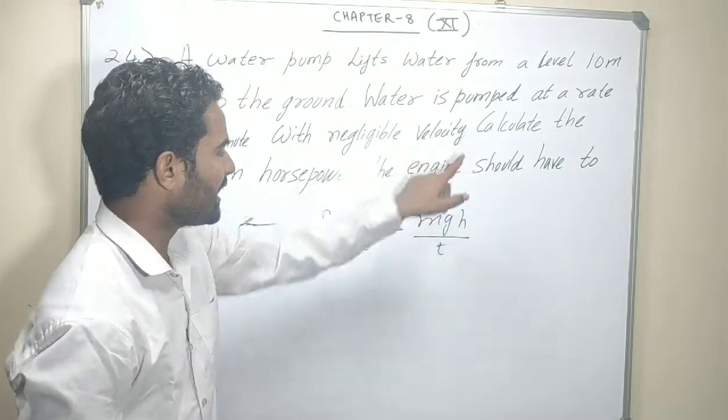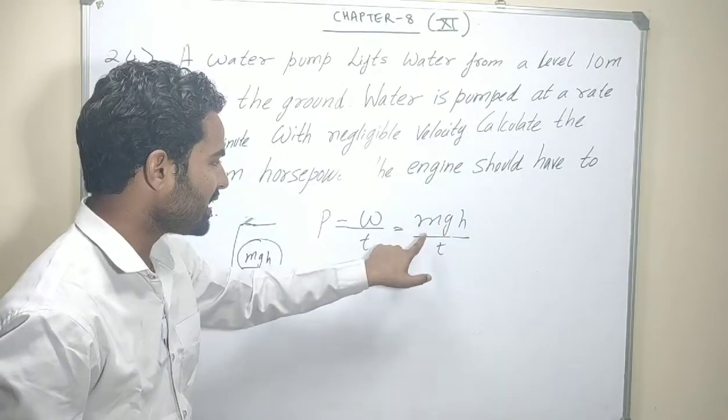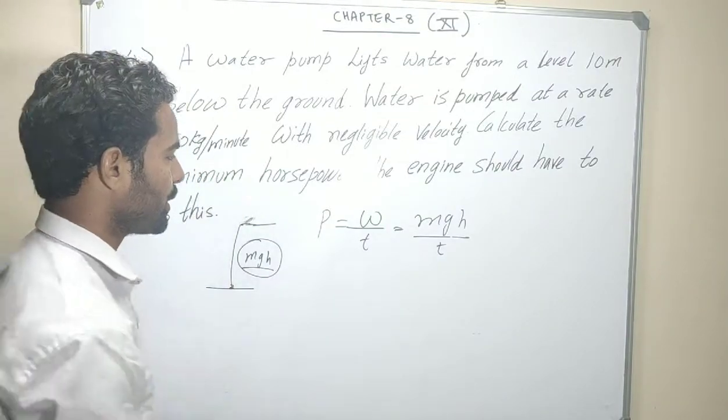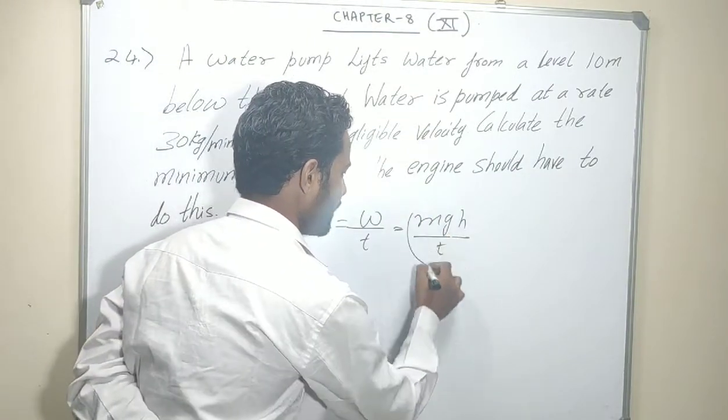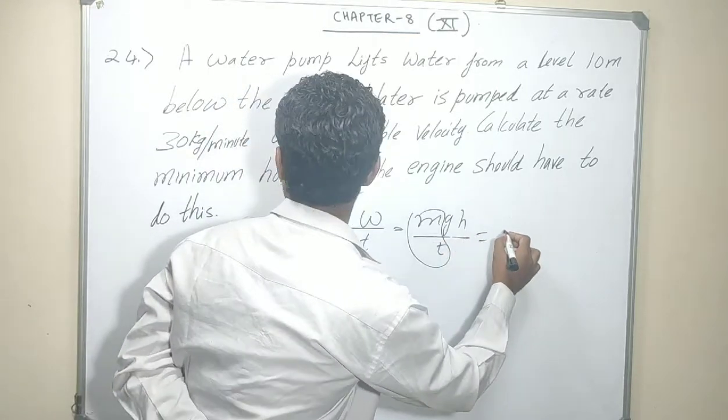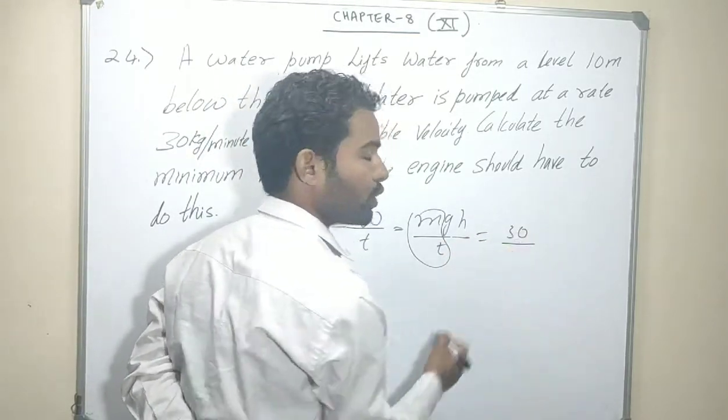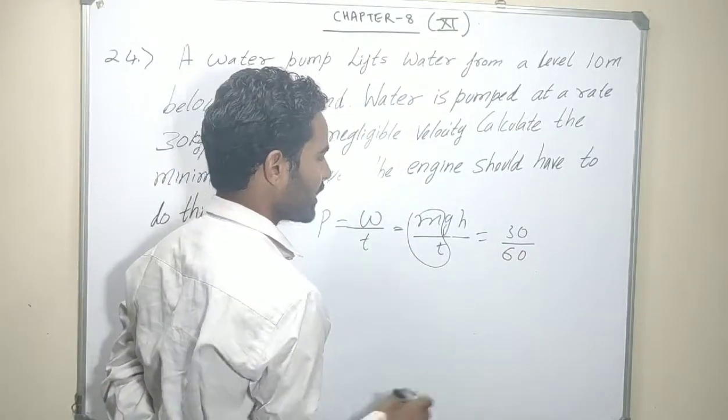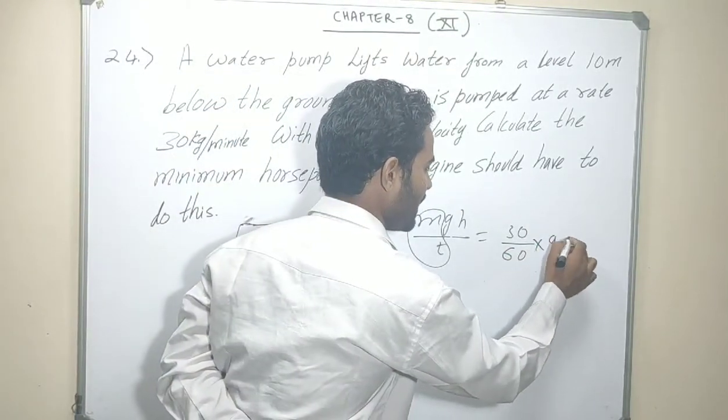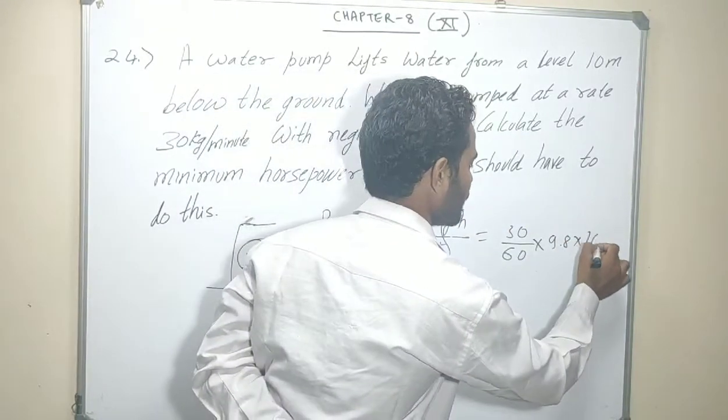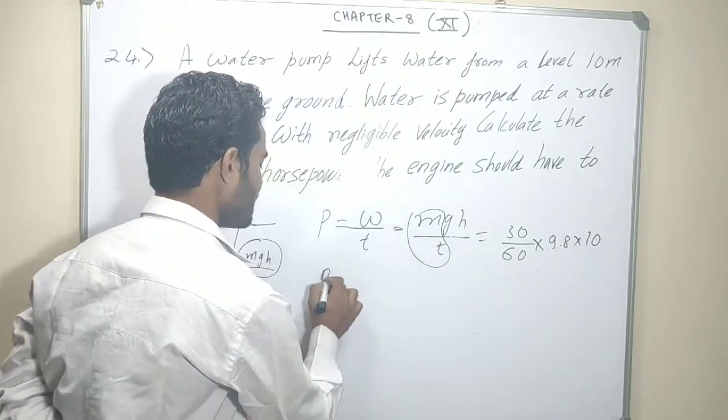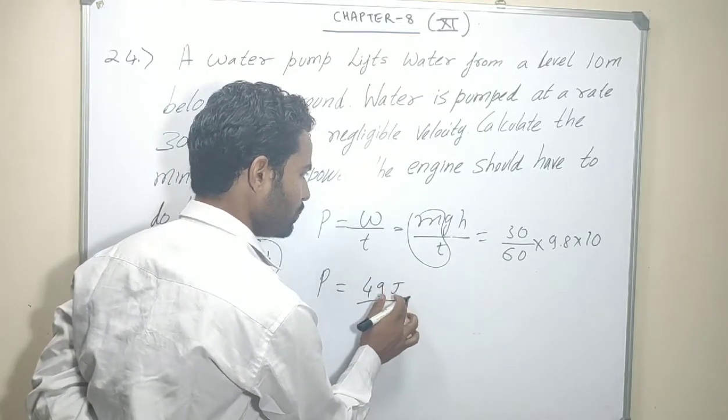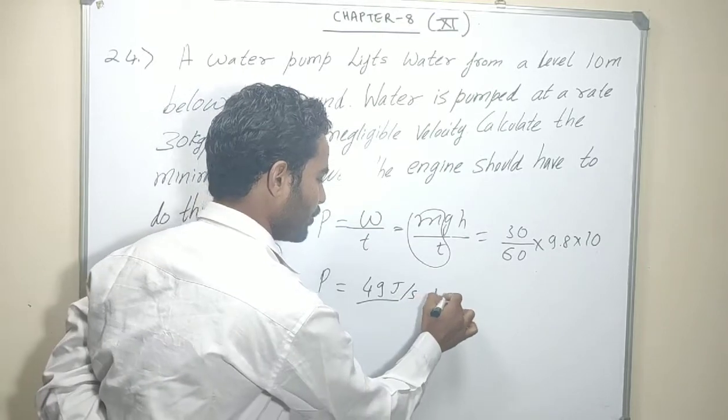Right. Ab yaha pe H given hai 10, G apne ko pata hai 9.8, M by T mass per minute time yaha de rakha hai, kitna 30 kg per minute. To direct value put ka dhata hai, M by T ki value kitna hai 30 kg per minute. Per minute ko mein per second me convert ka dhata ho, thakki SI me hajae ga. So M by T jo de rakha hai, G ki value 9.8 put ka dhata hai, and H ki value directly 10. To isko multiply karengi, to power kitna hajae ga apna, power hajae ga 49 joule per second.